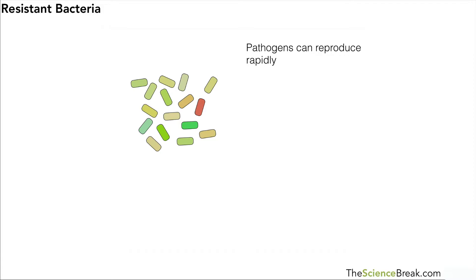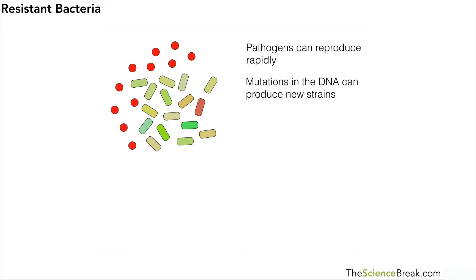What happens when they reproduce is that we get mutations in the DNA, and that can produce new strains. So mutations in the DNA could produce new strains or new variations of this bacteria.